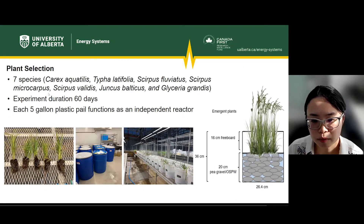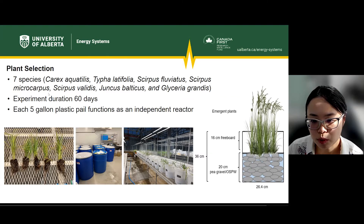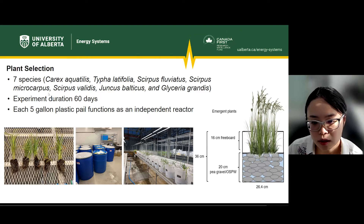In early September, we conducted a metal-contaminated simulated constructed wetland plant experiment using seven native aquatic plant species in the University of Alberta greenhouse. This experiment is going to run for 60 days, which provides sufficient time to evaluate plant survival and growth in oil sands process-affected water with high concentrations of naphthenic acids, polycyclic aromatic hydrocarbons, and heavy metals.